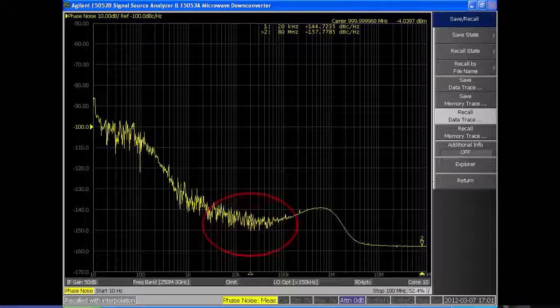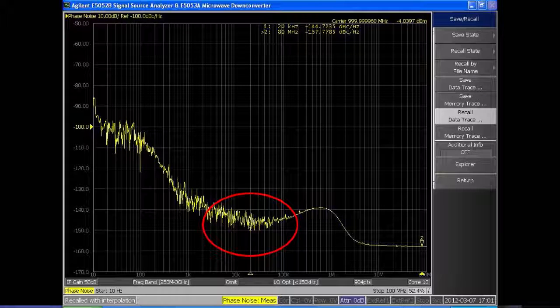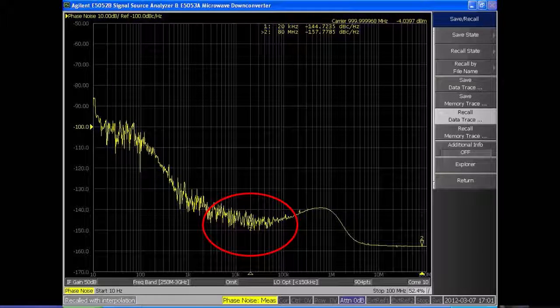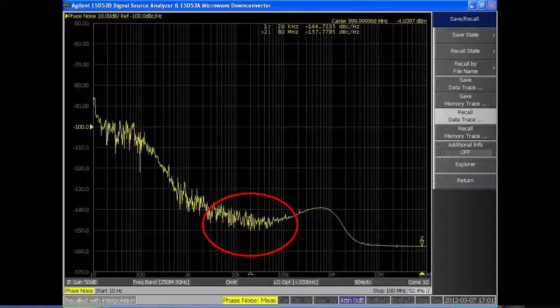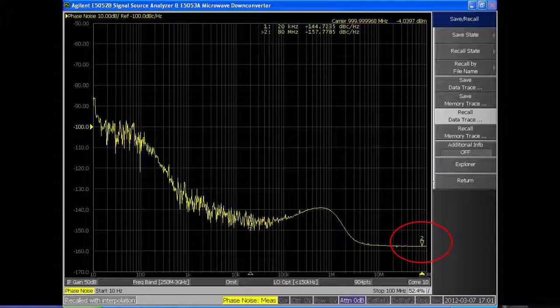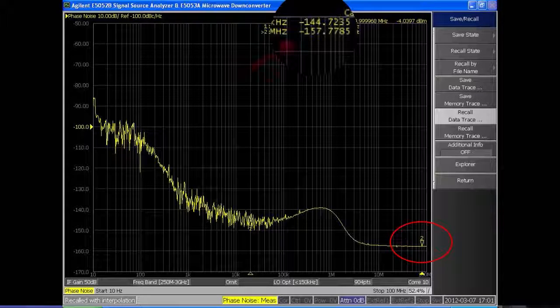We go here into the 20 kilohertz offset range. You'll see I'm sitting about minus 144 dBc per hertz. Again, 25 dB improvement over the first generation MXG. Out at broadband we're seeing minus 157 dBc per hertz at the 10 megahertz.